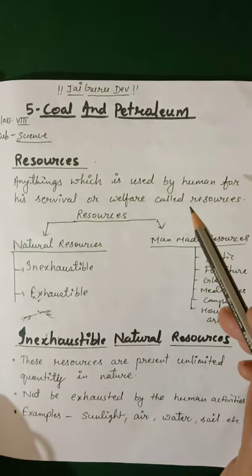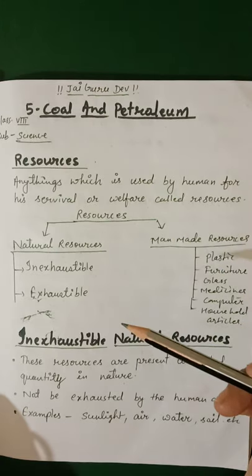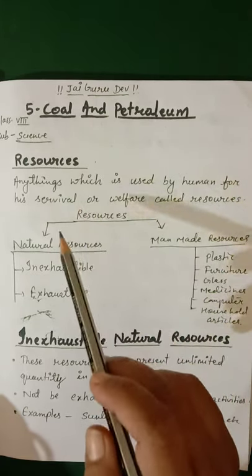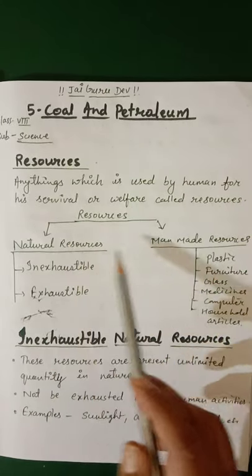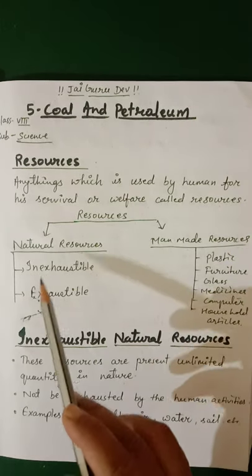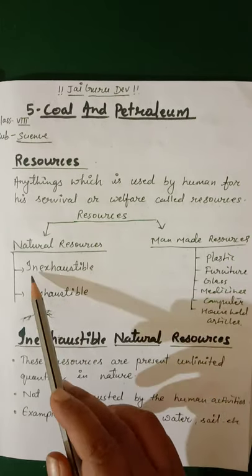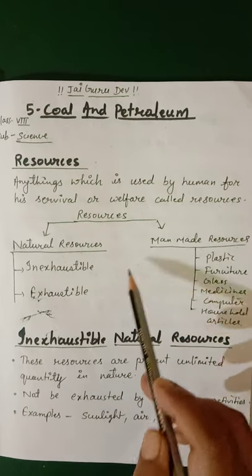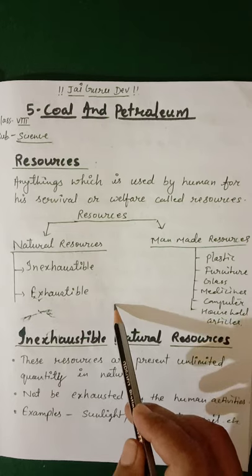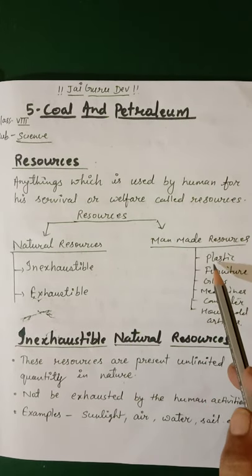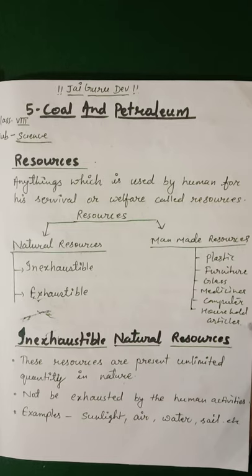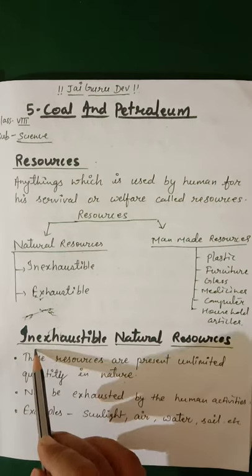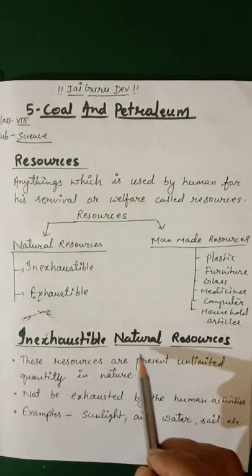These resources are things which satisfy human needs and are part of the environment. Resources are of two types: natural resources and man-made resources. Natural resources are of two types: inexhaustible natural resources and exhaustible natural resources. Man-made resources include plastics, furniture, glass, medicines, computers, and household articles.